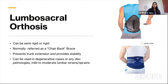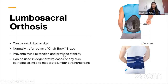The last is the lumbosacral orthosis — simply an LS belt or LS corset, which can be semi-rigid or rigid. Normally referred to as a chair-back brace, it helps prevent trunk extension and provides additional stability to the trunk. It is most commonly used for low back pain, degenerative spinal conditions, disc pathologies, and mild to moderate sprains of the lumbosacral region.